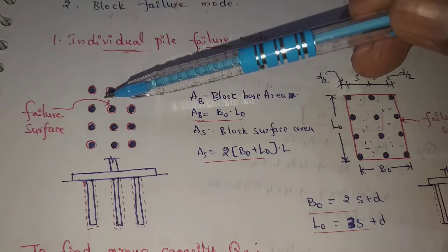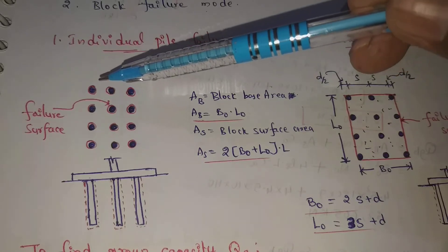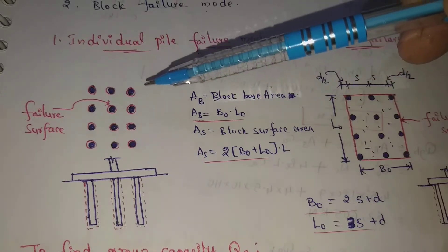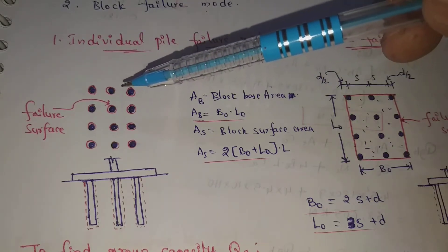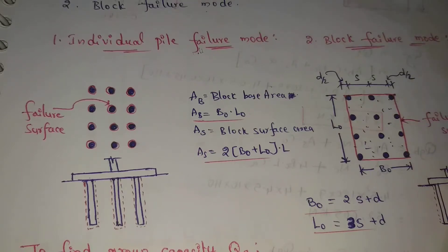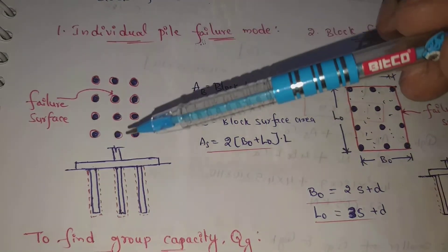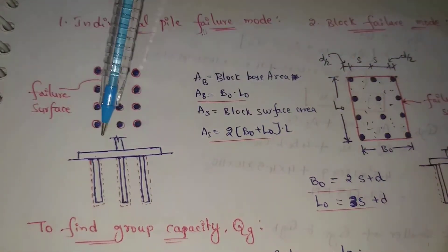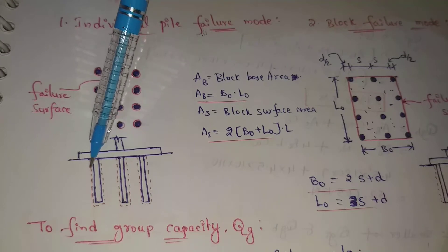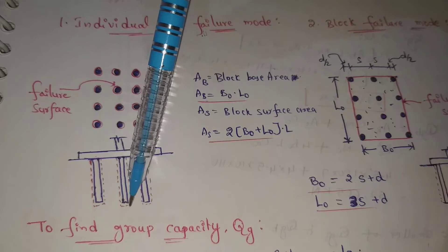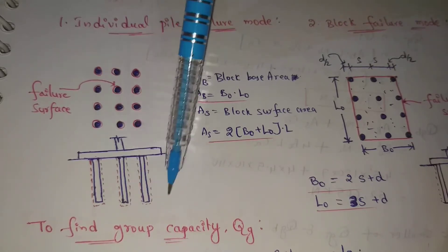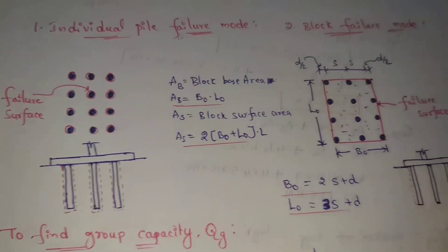The surrounding surface failure mode applies to each individual pile. This is the cross-section. This is the first pile in the surrounding area, shown with a dotted line. That is the individual pile failure mode.